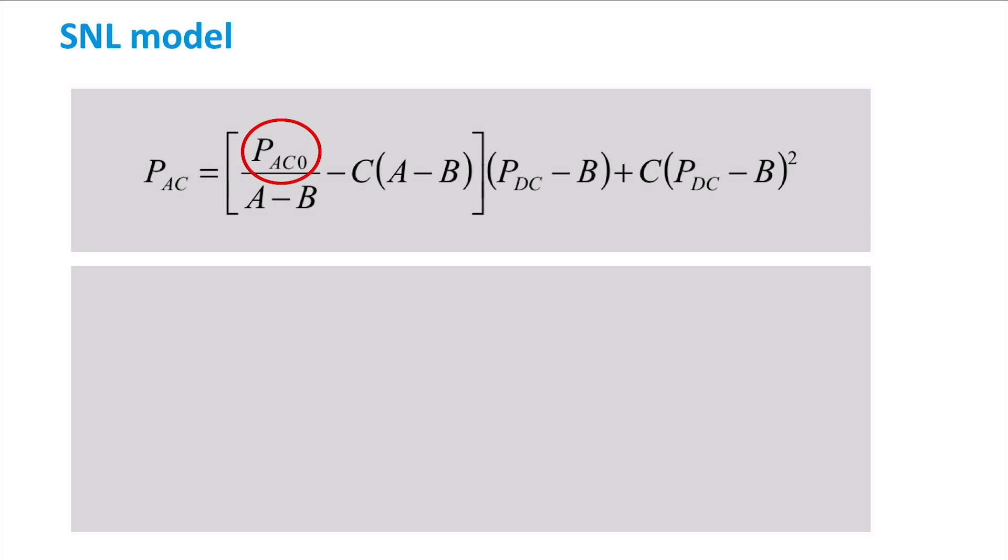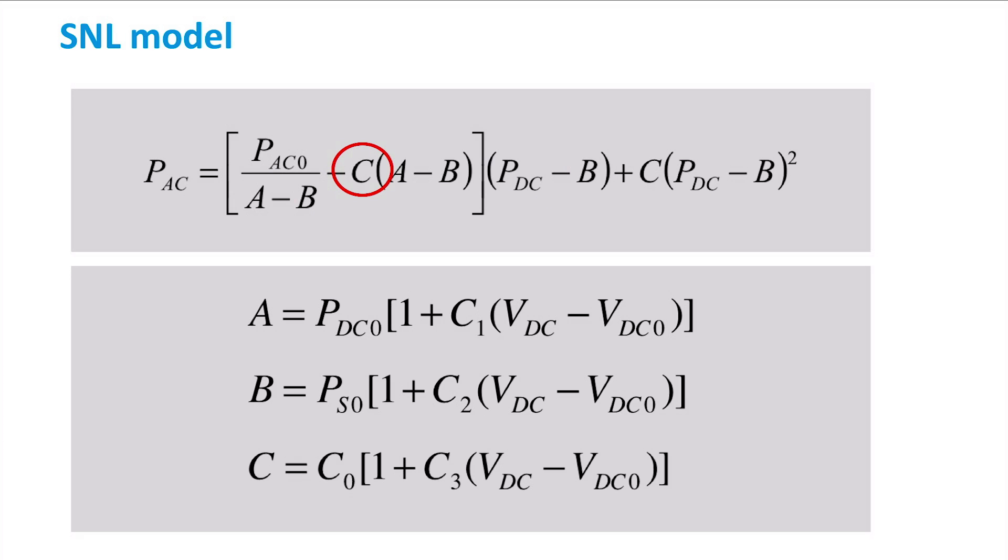PAC0 is the nominal AC power of the inverter. PDC is the instantaneous DC power provided by the PV array. Then, some other parameters are used. A is an empirical value as well as B and C, all shown on the screen. In these three parameters,